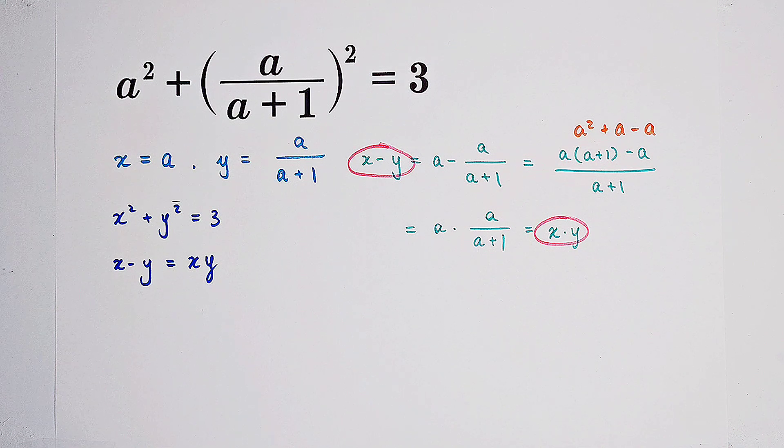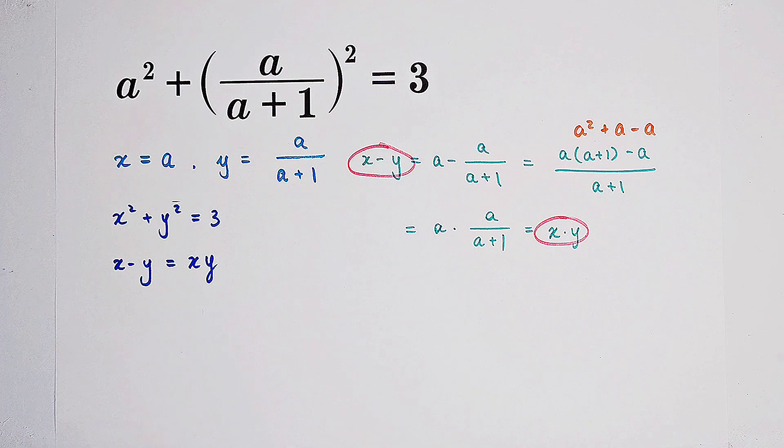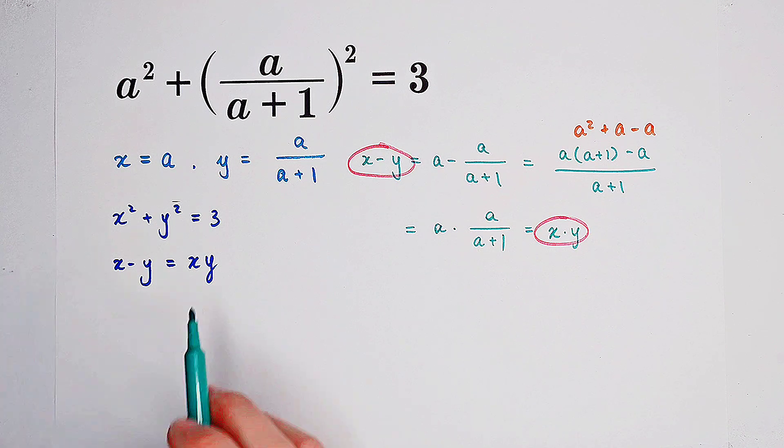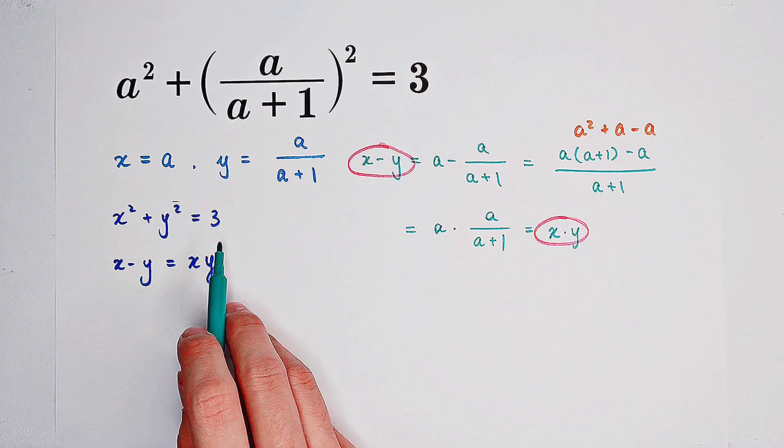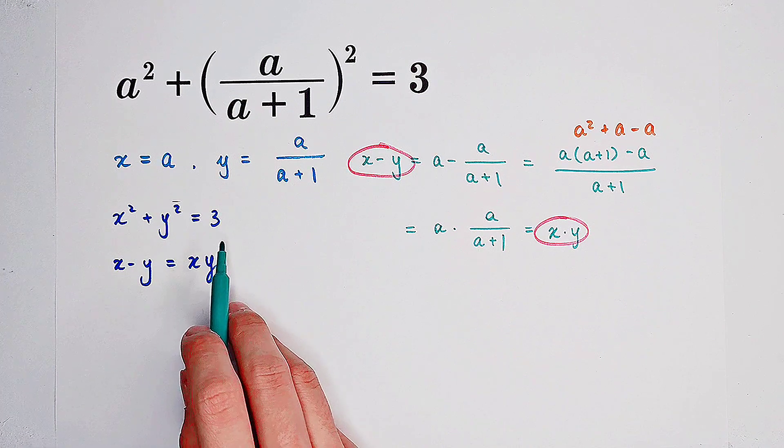So x times y is just a squared over a plus 1. If we can solve for the value of a squared over a plus 1, namely x times y, then we can get a quadratic equation about a and solve for a.